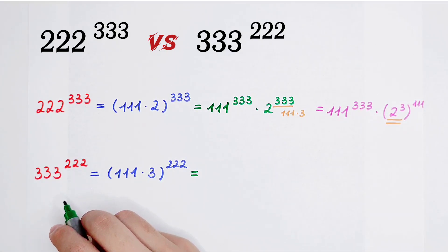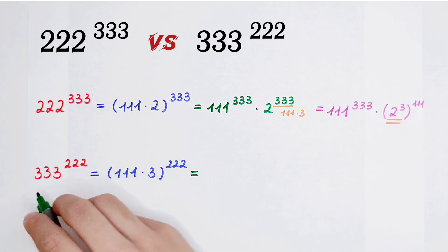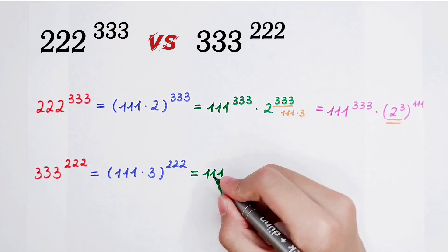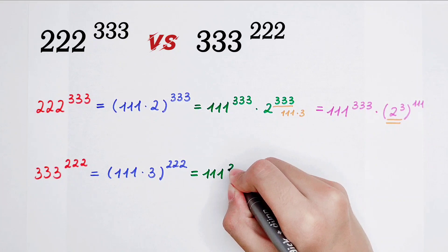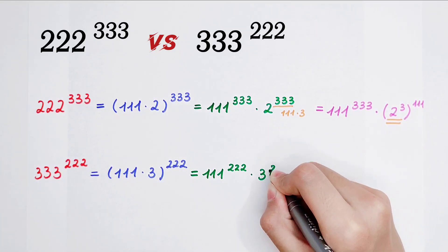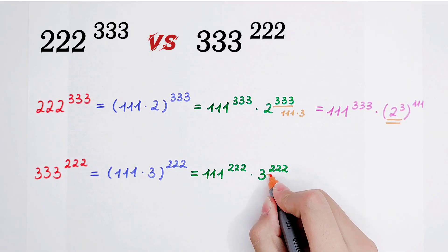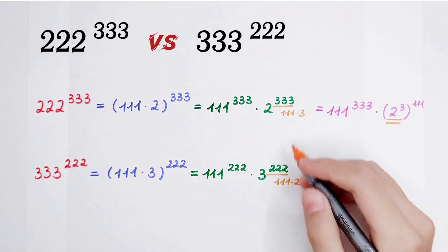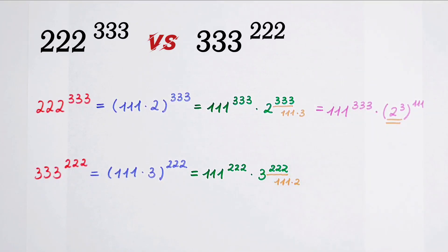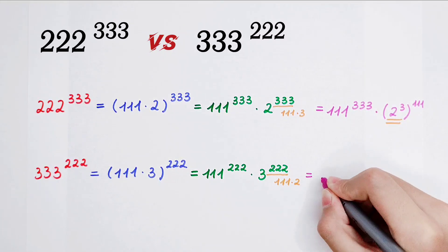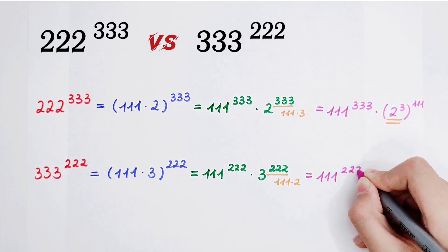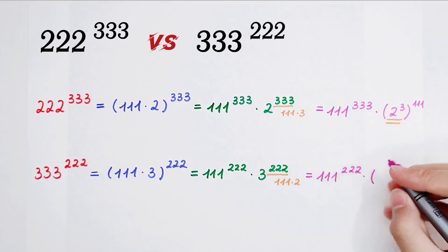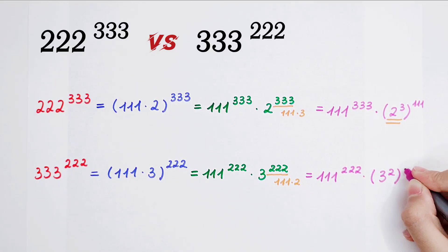For 333 to the power of 222 — same approach: 333 is 111 times 3, in brackets, to the power of 222. It can be written as 111 to the power of 222, times 3 to the power of 222. Now 222 is also too heavy on the 3, so we rewrite it as 111 to the power of 222, times 3 to the power of 2, all to the power of 111. And 3 to the power of 2 is 9.